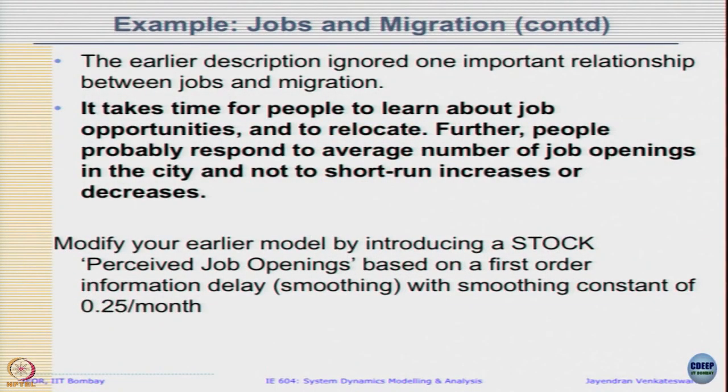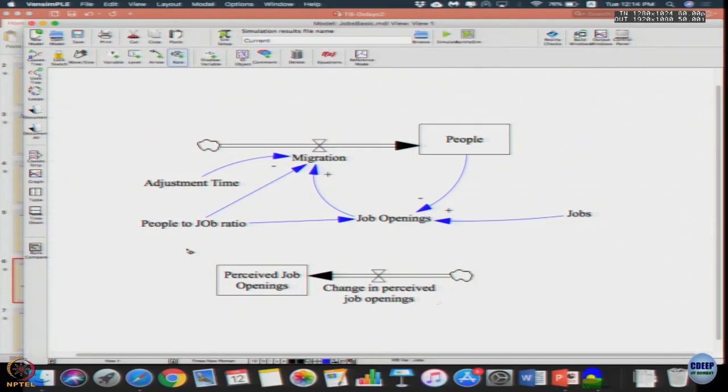Now we are going to modify this existing model by introducing a stock called perceived job openings, which will be based on a first-order information delay with a smoothing constant of say 0.25 per month. As soon as you create a stock, immediately add a flow because stocks can only be changed through flow, else you'll be too tempted to just put another variable and your system may not work the way you expect it to.